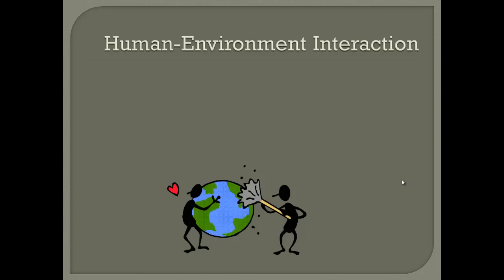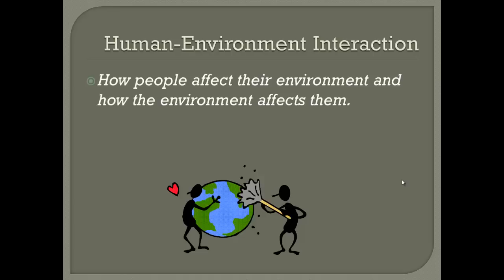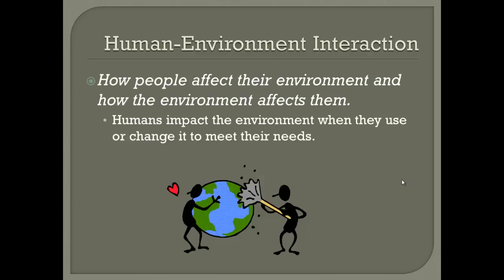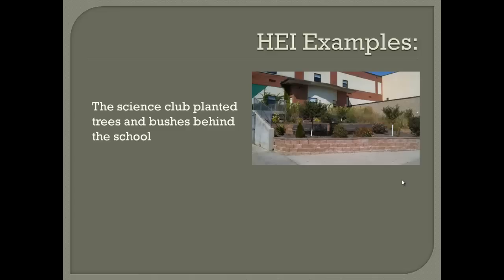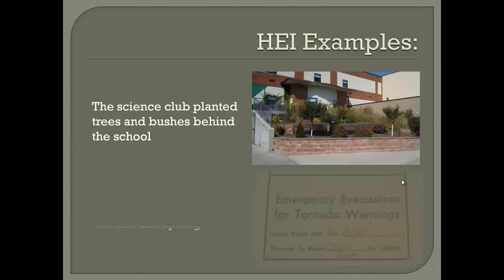Our fourth theme is Human Environment Interaction, or HEI. It is defined as how people affect their environment and how the environment affects them. Humans impact the environment when they use or change it to meet their needs, and the environment influences the way we live. At Tomah Middle School, one way we've affected the environment is by planting trees and bushes behind the school to make a seating area for students during lunch. One way the environment affects us at TMS is through drills — students practice tornado drills in the fall and spring. If we lived in a location where tornadoes were not common, we may not spend as much time going through these drills.